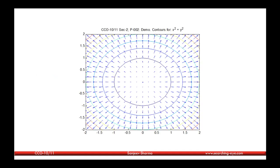For example, consider f(x) = x² + y². This figure shows the contour levels of the function, which has value zero at the origin and increases as we move away. The contours are circles. As we can see, the gradient points in the direction of maximum increase, so to decrease the value of the function we just need to move in the direction of the negative gradient.